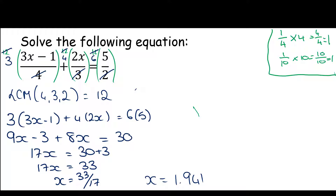We want to get all the letters on one side and all the numbers on the other, so let's move the 5x across and the plus 6 over. Remember the rule when working with equations: when we bring something across the equals sign we do the opposite. So minus 5x becomes plus 5x, and the plus 6 becomes minus 6.